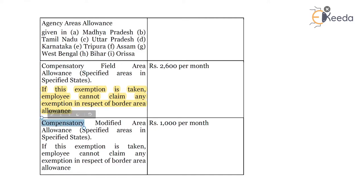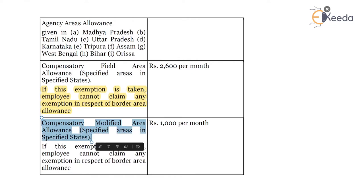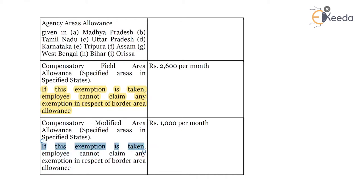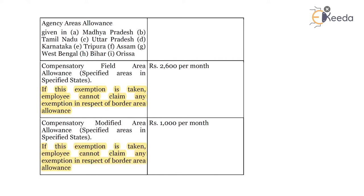Next is compensatory modified area allowance. If this exemption is taken, the employee cannot claim any exemption in respect of border area allowance. The limit is 1,000 per month.